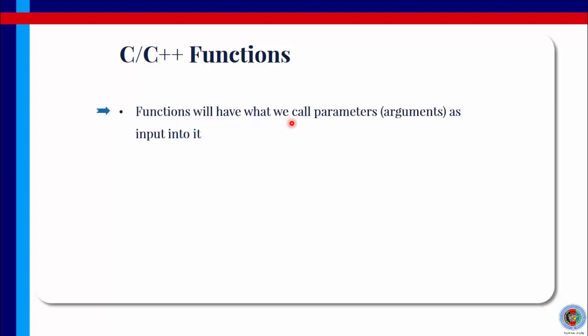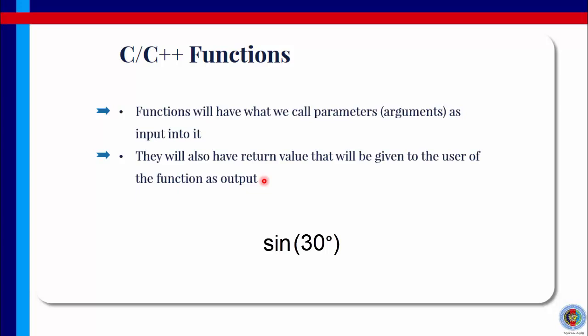Functions will have what we call parameters. Sometimes we also call these parameters as arguments. And these parameters or arguments is what we call input into the function. And they most likely will also have a return value that will be given to us or the user of the function as output. We give some input then we expect some output. You can compare this like the sine function in trigonometry. The input to the sine function is the angle, for example 30 degrees, and the output is the sine value of the input, 30 degrees, which is 0.5.